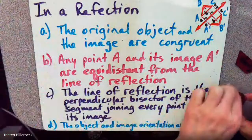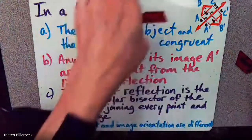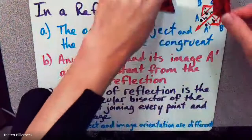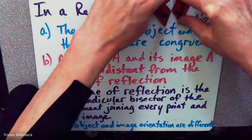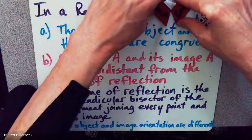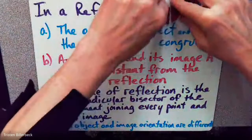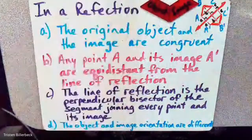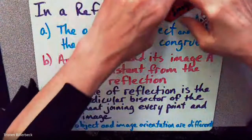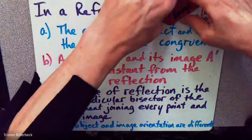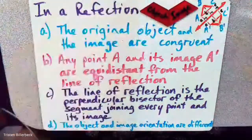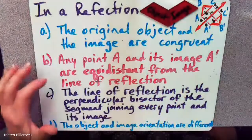We have our original object and our image are congruent — that's important. They may be reflected in various ways; you could reflect it like that. The image and the object are congruent.